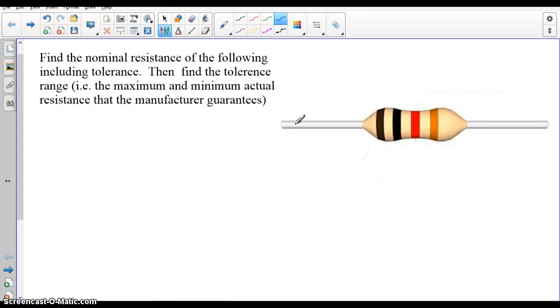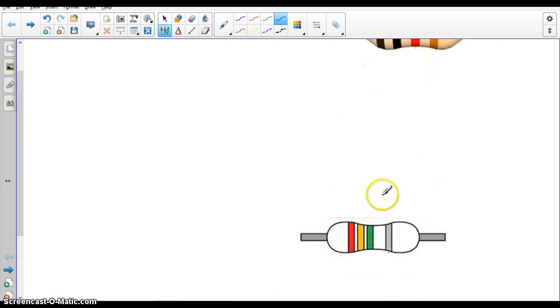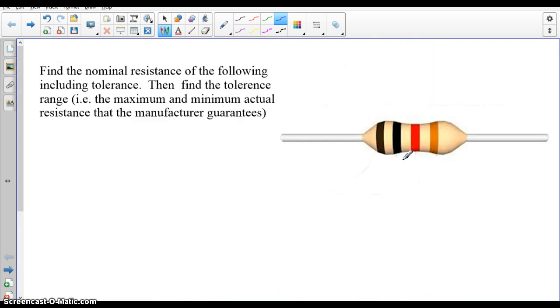Hopefully you've noticed that all the resistors you've been working with, all these billions of resistors we have in the classroom, all have a bunch of colored stripes on them. I'm going to do two examples with two different random resistors of how to figure out what that means.